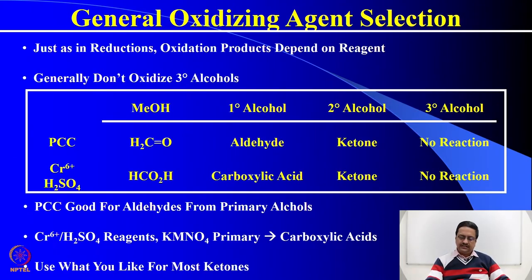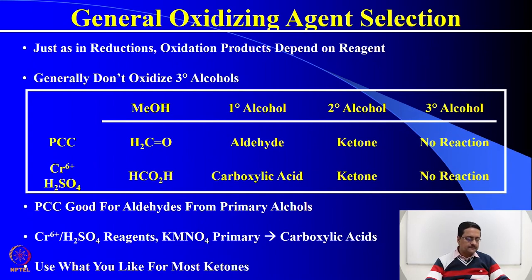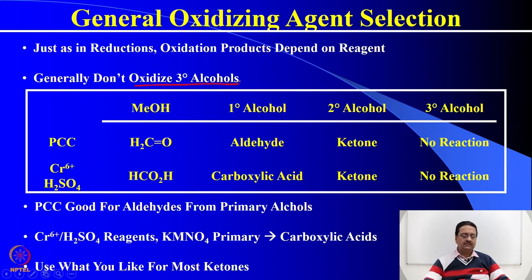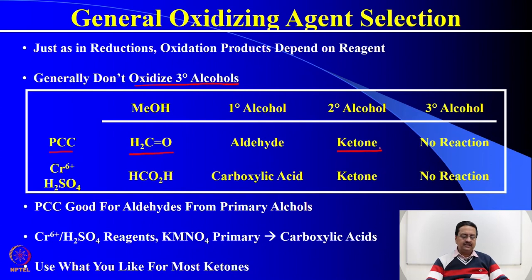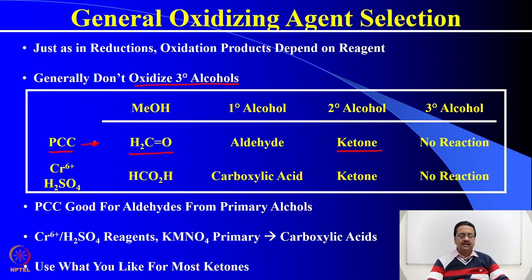Just like the previous lecture, where we talked about the effect of different reducing agents on various carbonyl compounds, here I am tabulating the effects of these two oxidizing agents on various alcohols and the corresponding products. We generally do not try to oxidize tertiary alcohols; we only try to oxidize methanol, primary alcohol, or secondary alcohol. So if you use PCC, pyridinium chlorochromate, it can oxidize methanol to formaldehyde, primary alcohol to any higher aldehyde, secondary alcohol to a ketone, and it does not have any effect on tertiary alcohol.